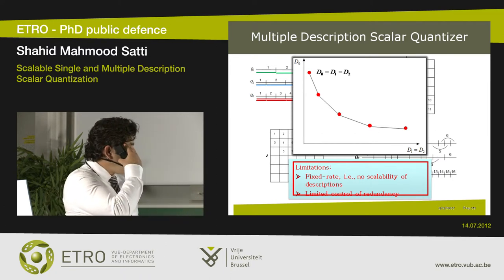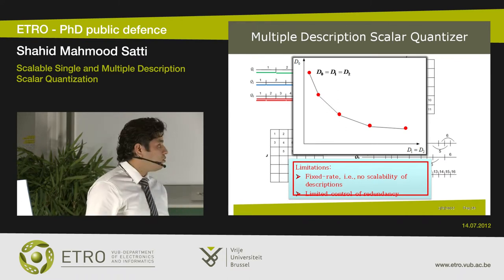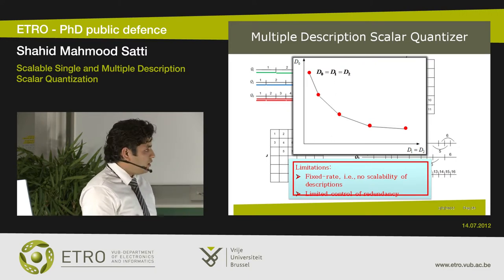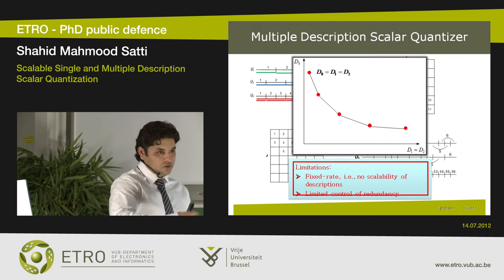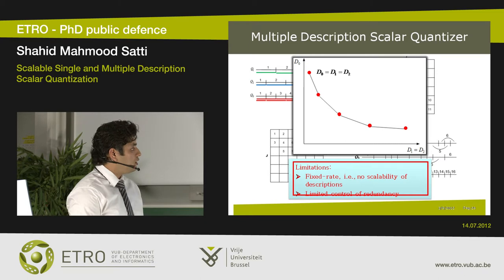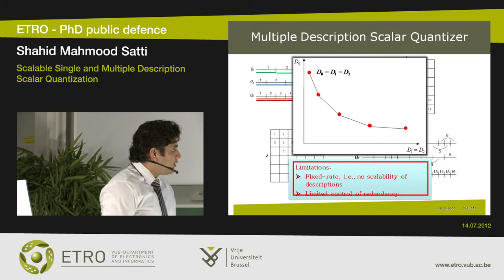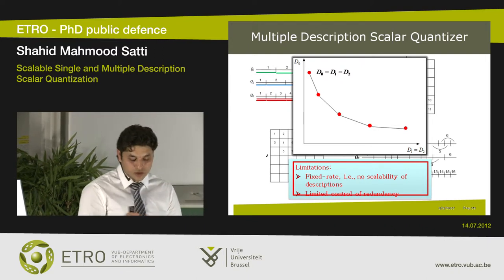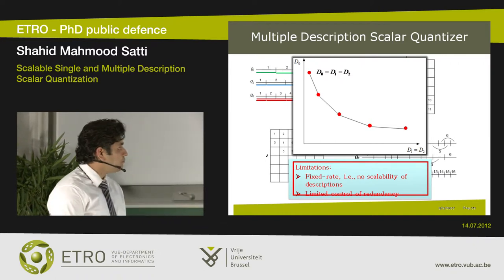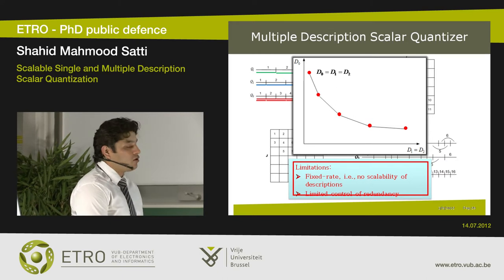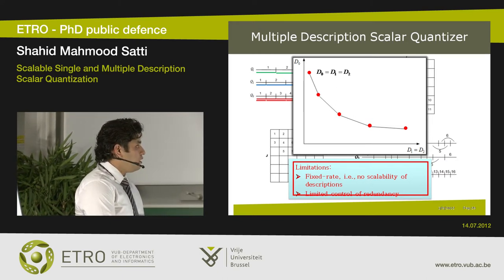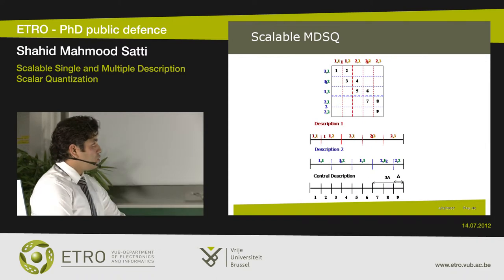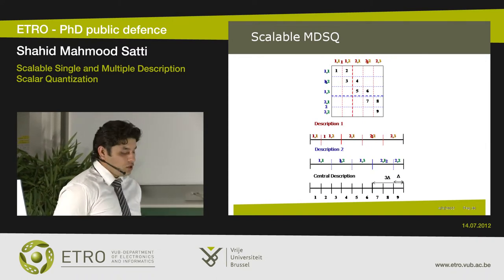The two main limitations are: first, they are fixed rate quantizers, so descriptions cannot be encoded or decoded in a scalable fashion — scalable meaning that as the rate increases, you reduce the distortion. The second limitation is that they give limited control of the redundancy between the two descriptions, since the total number of redundancy points is limited to the total number of potential diagonals in the index assignment matrix. So the solution is to go to the scalable extension of MDSQs, known as scalable MDSQs.